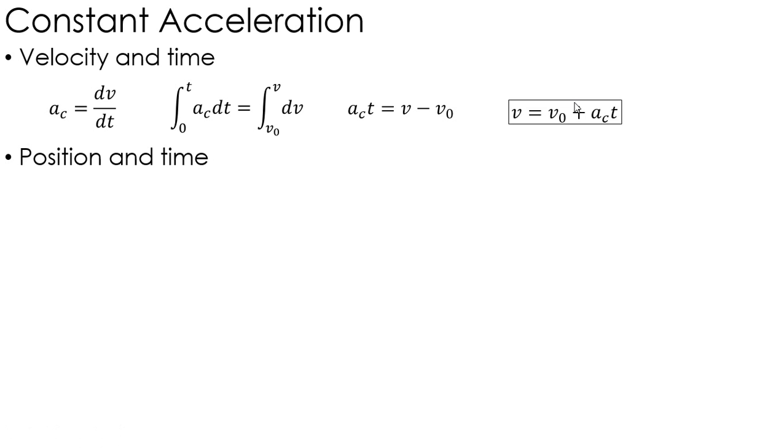We can do the same thing with position and time, starting with the velocity equaling ds/dt, and then taking what I know about velocity for constant acceleration that I just found, plugging that in. Now, doing a little rearranging here, bringing dt over to this side,